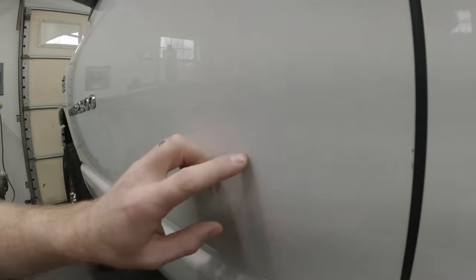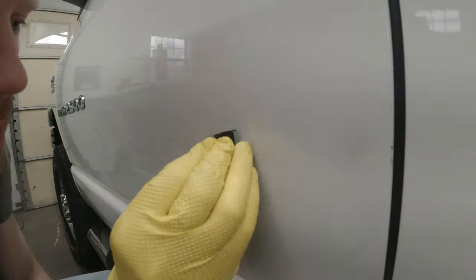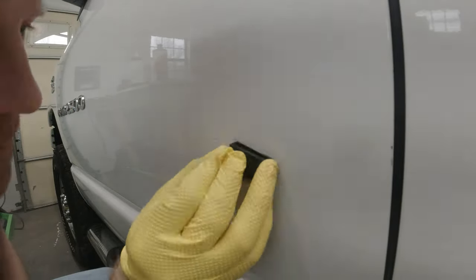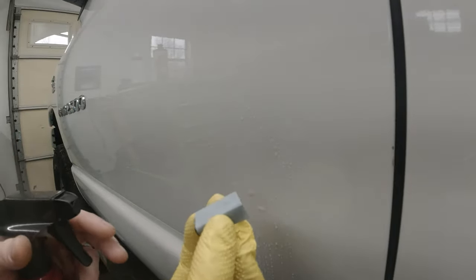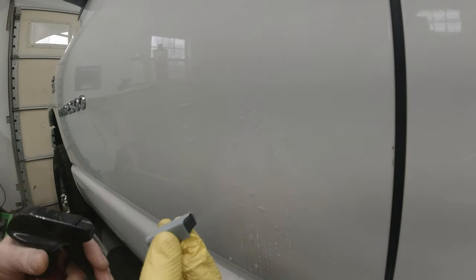Now we're gonna come back with our 2,000 grit sandpaper and wet sand this whole area so it's all nice and even. Now that we got everything all nice and level we're gonna hit it with our 3,000 grit and remove the scratches that we put in it with the 2,000 grit.